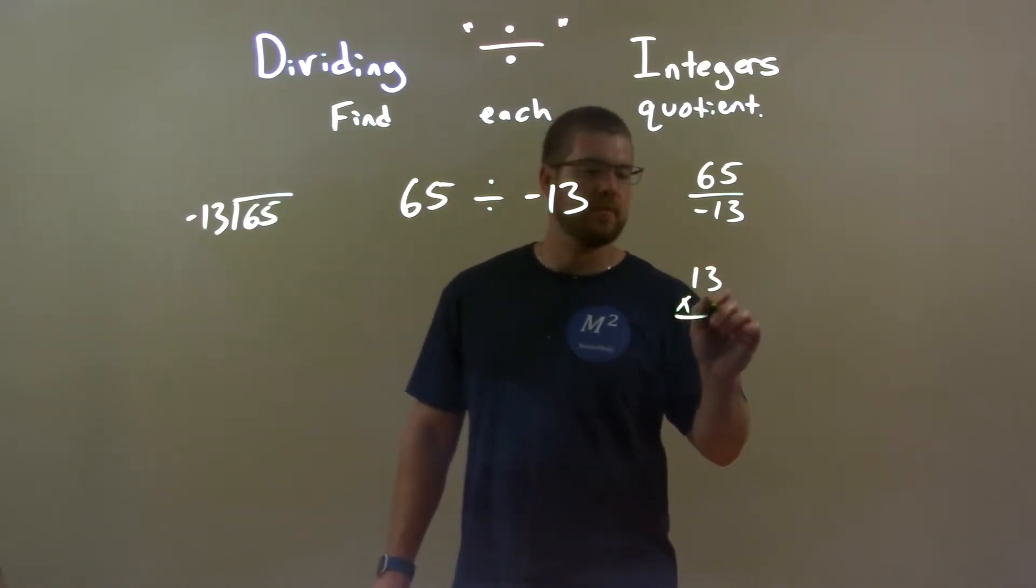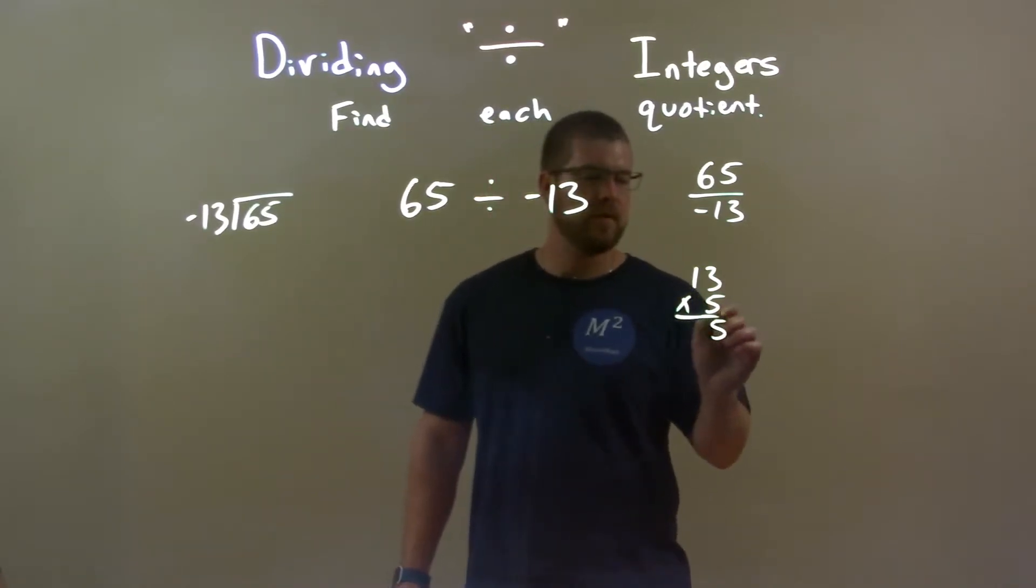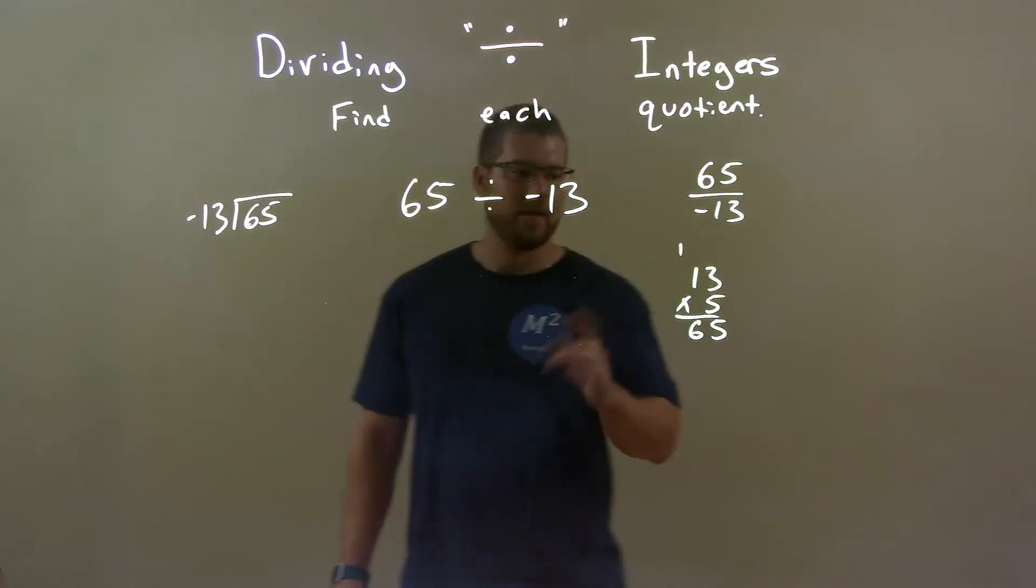13 times 5. Well 5 times 3 is 15. 5 times 1 is 5 plus 1 is 6. Right on the money there.